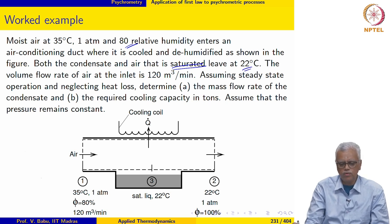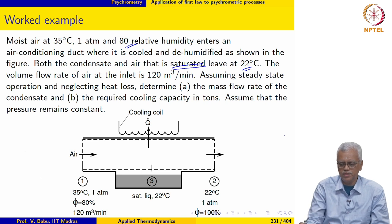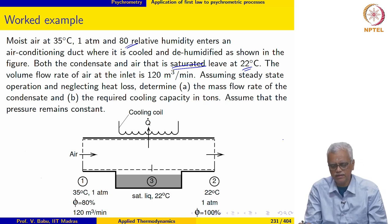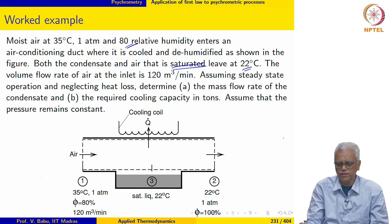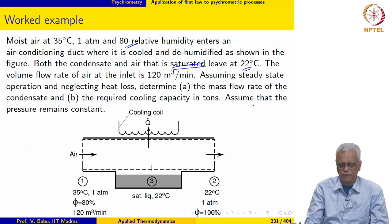The volume flow rate of air at the inlet is 120 m³ per minute. Assuming steady-state operation and neglecting heat loss, determine the mass flow rate of the condensate and the required cooling capacity in tons. The pressure remains constant.